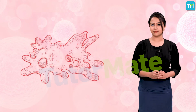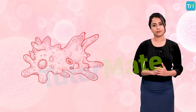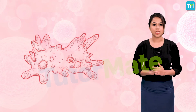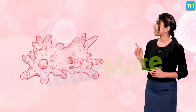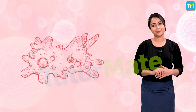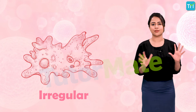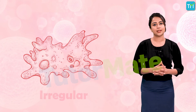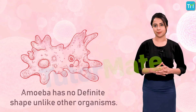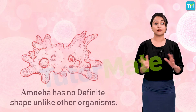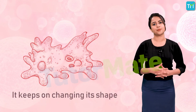If you take a look at an organism like amoeba, how would you define its shape? You may say the shape appears irregular. Amoeba has no definite shape, unlike other organisms — it keeps on changing its shape.